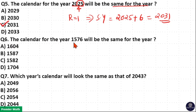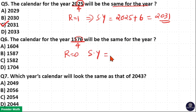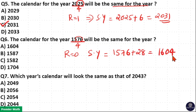For 1576: divide by 4 — take 76 by 4, which gives remainder 0. If the remainder is 0, add 28: 1576 plus 28 equals 1604. So option A is your answer. The 1576 calendar and the 1604 calendar are the same.